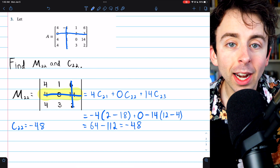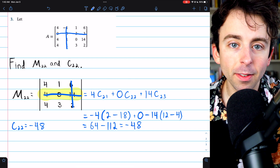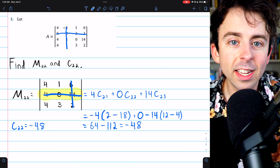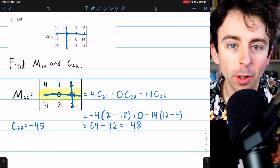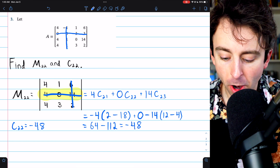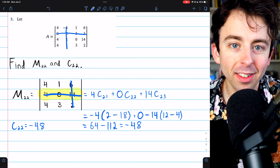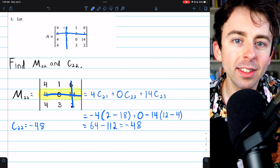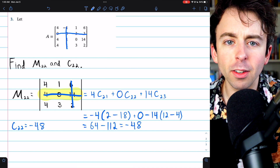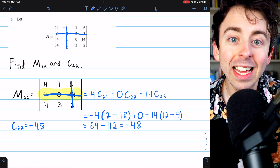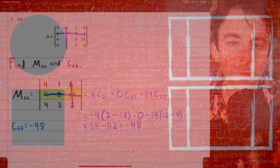And that's how you find the minor and the cofactor of an entry of a matrix — also a sneak peek at how to find determinants using cofactor expansions. This is the general process that works for any square matrix. Let me know in the comments if you have any questions, and if you find these linear algebra lessons helpful, please consider supporting Wrath of Math on Patreon. Link in the description — it's a huge help. Thanks for watching.